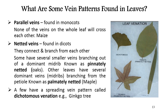Veins of flowering plants are found in several patterns. Most patterns can be categorized into two main groups: parallel venation and netted venation. Parallel venation is found in monocots — none of the veins on the whole leaf cross each other; they may appear to fuse together at the top and bottom of the blade. Netted venation is found in dicots — they connect and branch from each other. Some have several smaller veins branching from a dominant midrib, known as pinnately netted venation. Others have several dominant veins branching from the petiole, known as palmately netted venation, as in maple leaves. A few have a spreading vein pattern called dichotomous venation, for example, leaves of Ginkgo biloba.